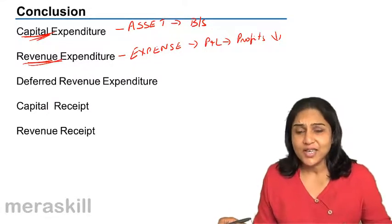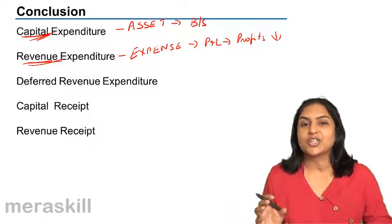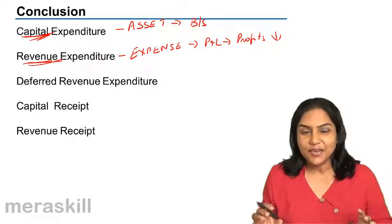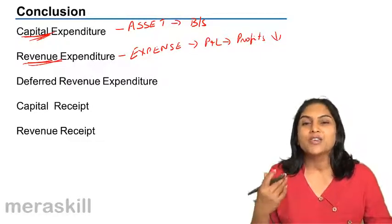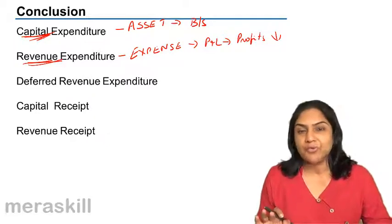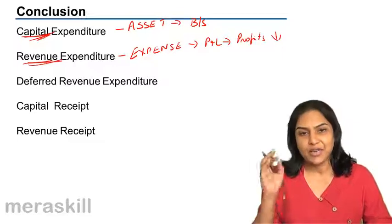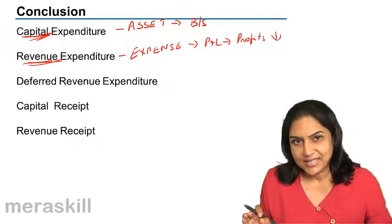Having said all this, if the cost is not very material, not very significant, it is very small amount, it is always better to treat it as revenue, write it off to the profit and loss account instead of carrying very small, insignificant amounts as assets in the balance sheet.